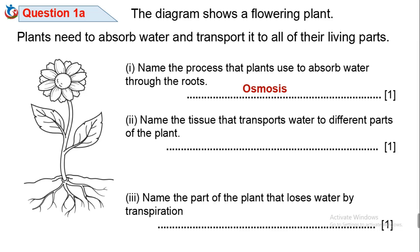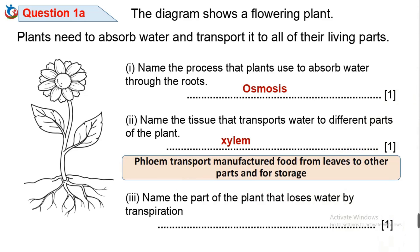Question 1a2: Name the tissue that transports water to different parts of the plant. The tissue that transports water to different parts of the plant is called xylem. It is also good to remind ourselves of the difference between the two plant tissues: xylem and phloem. The phloem transports manufactured food from leaves to other parts and for storage, while the xylem transports water to different parts of the plant.